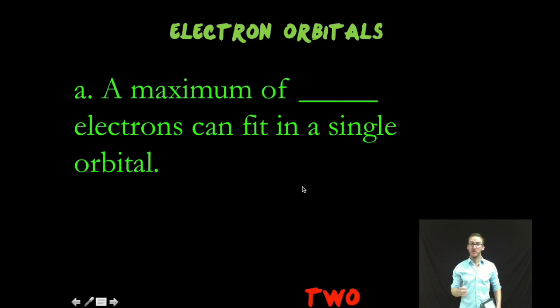Now, it's important to note that you can only fit a maximum of two electrons in any single orbital. Now, we have to remember that electrons have a negative charge, and two like charges will repel. So how is it even possible to fit two electrons or two negative charges into the same three-dimensional region of space?